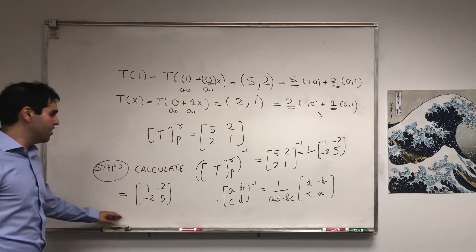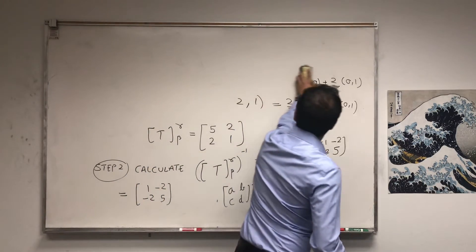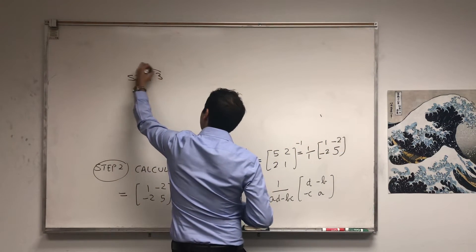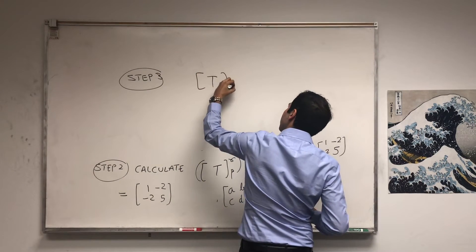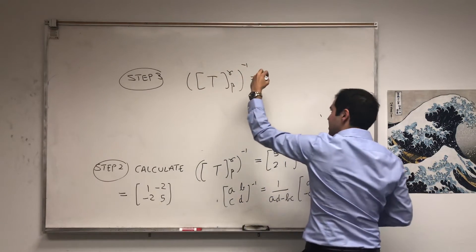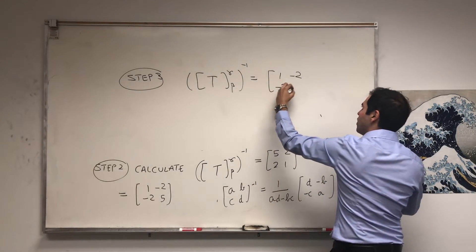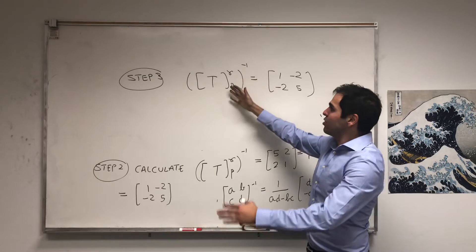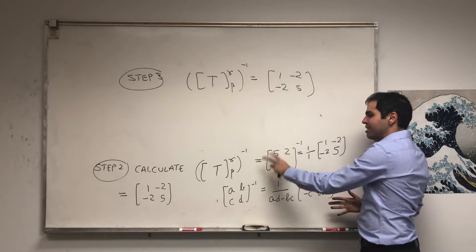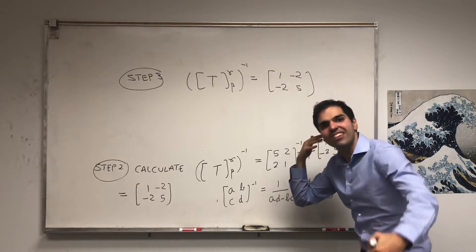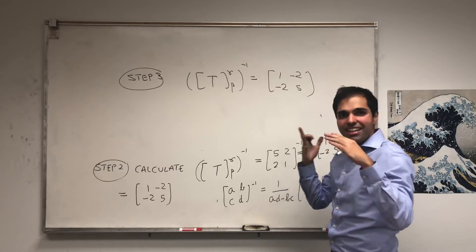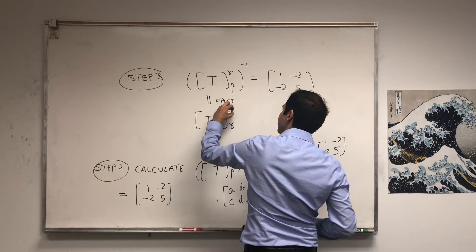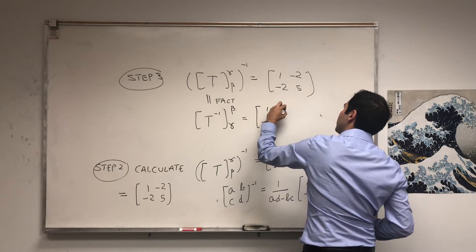And from this, we can find T inverse. Because we know that T from beta to gamma inverse equals to this matrix 1, minus 2, minus 2, 5. Now, here comes a beautiful fact. And if you're interested, I can prove this. If you take the inverse of the matrix, the inverse of this list of numbers, it turns out it gives you the matrix of the inverse transformation. So you can find T inverse from that. So here's a big fact: that is the same thing as T inverse, but you have to switch the basis from gamma to beta.